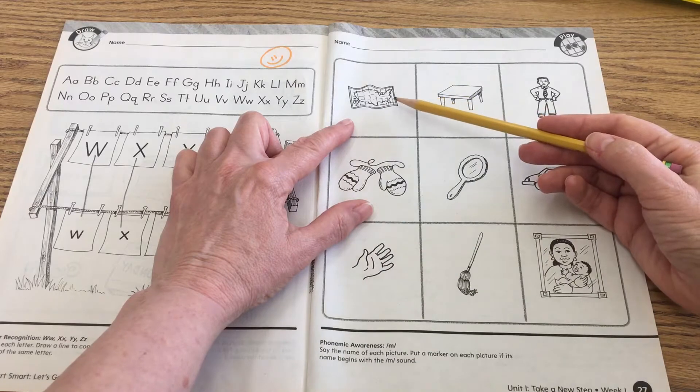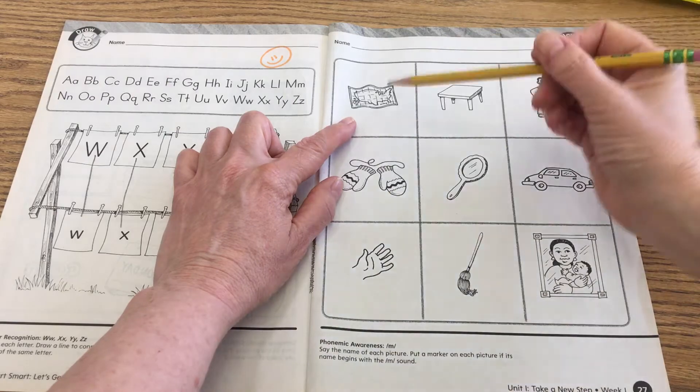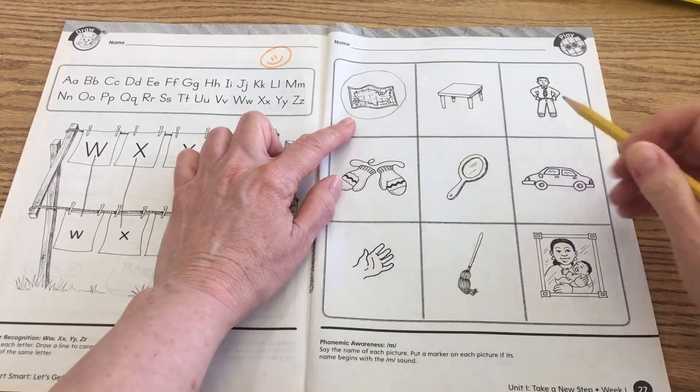So this is a picture of a, do you know what that is? Map, echo map. Okay, so that makes the mmm sound like monkey. It begins with the same sound, so we can circle it.